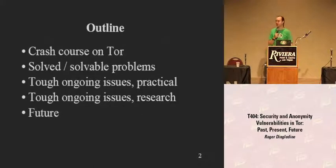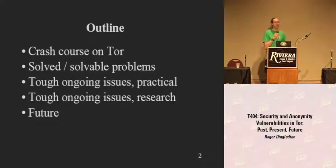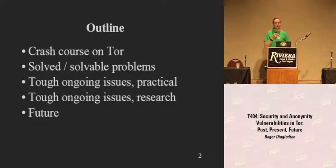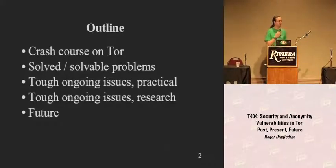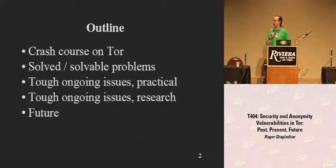There are three categories to what I'm going to talk about today. One is solved and solvable problems — a lot of them are code or implementation problems, the sort of thing where we look at the code and say, that line right there means Tor doesn't provide any security or anonymity at all. We've also got some tough ongoing practical issues, like application-level vulnerabilities and ways that using real live applications can screw you. And then there are research things — academic attacks on Tor, some pretty esoteric but pretty effective.